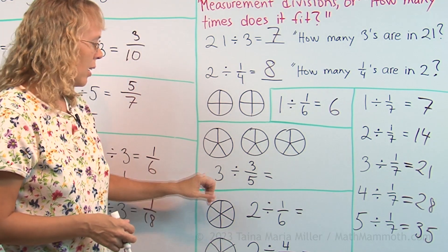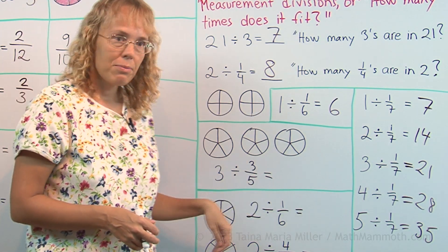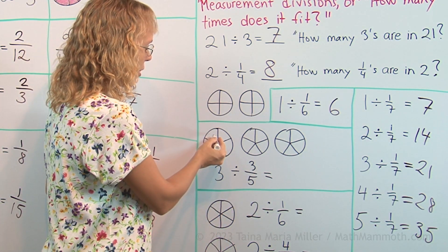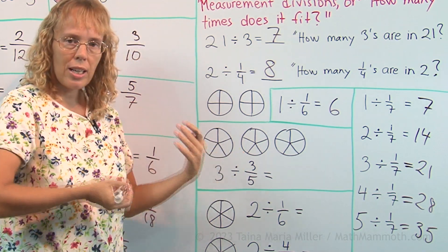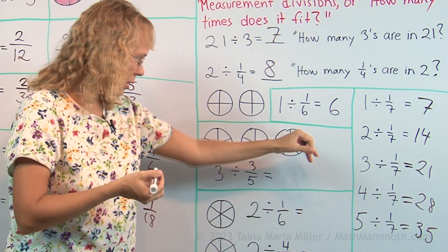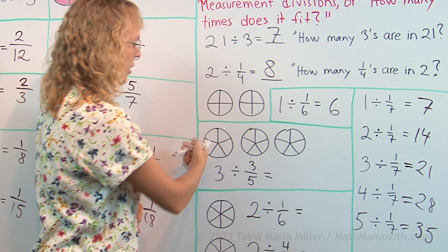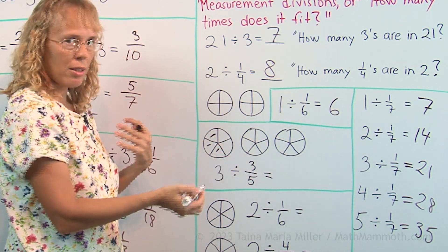A few more. Three divided by three-fifths. You can think this way. Okay, three-fifths. I'll just count how many times I can get three-fifths out of this here. I have my three pies here. And so, here's one time three-fifths. Second time.